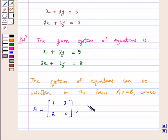X is equal to [x, y] and B is equal to [5, 8].